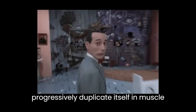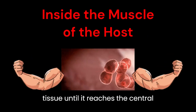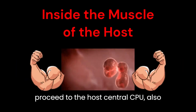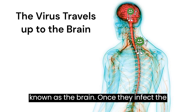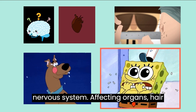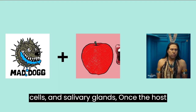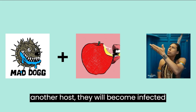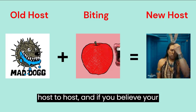Rabies will progressively duplicate itself in muscle tissue until it reaches the central nervous system, from where it will proceed to the host's brain. Once it infects the brain, it will spread throughout the nervous system, affecting organs, hair cells, and salivary glands. Once the host bites another host and saliva reaches them, they will become infected as well. This is how rabies spreads from host to host.